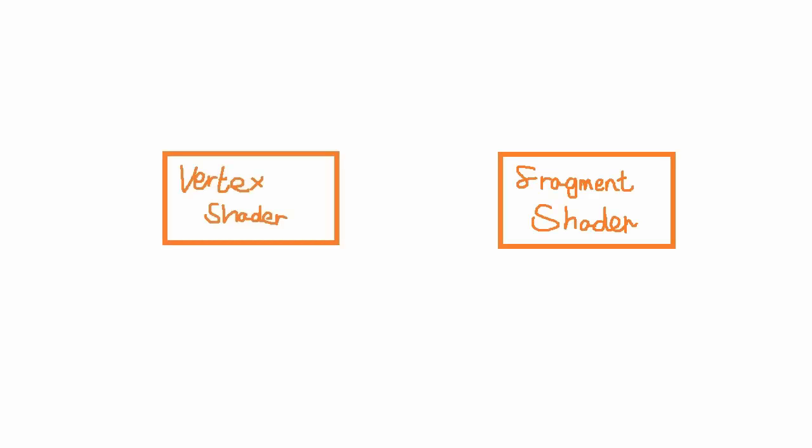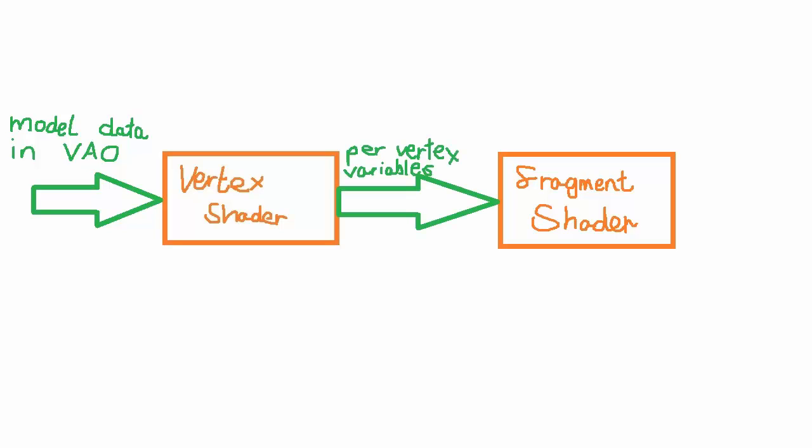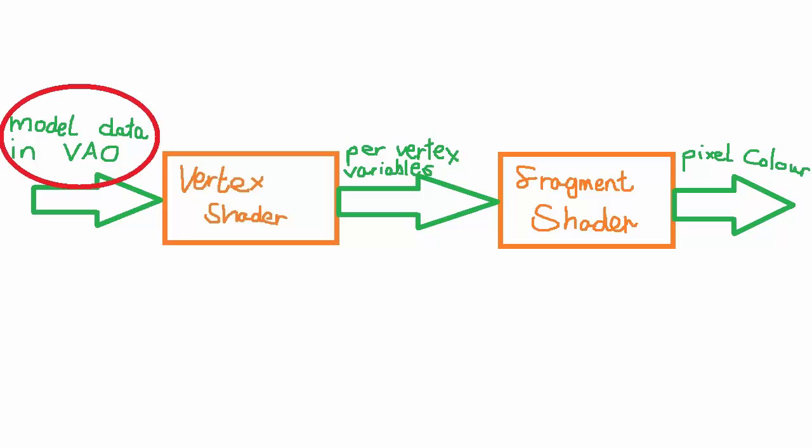Now we can get on with some new stuff. First off, I want to talk about uniform variables. To understand why we use them, we need to remind ourselves how the shaders are set up. We have a vertex shader and a fragment shader. The inputs to the vertex shader come from attributes in a VAO, which the vertex shader uses to determine per-vertex outputs. These outputs are passed to the fragment shader, which interpolates them and uses them to determine the output colour of each pixel. The only input to this whole system comes from the model data in the VAO.